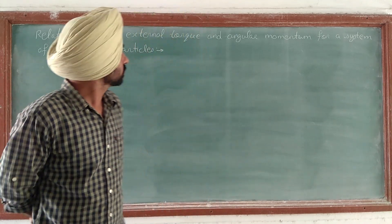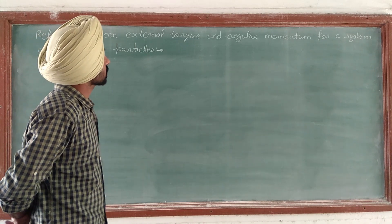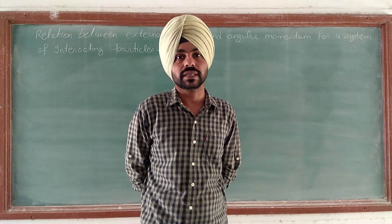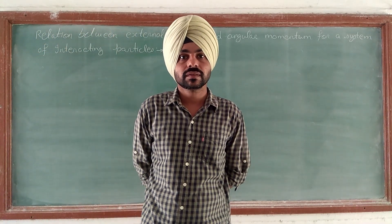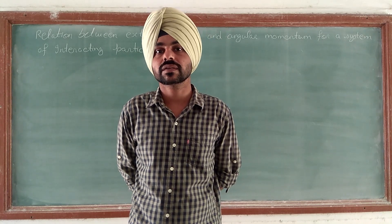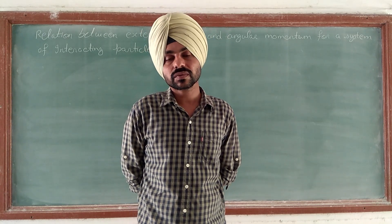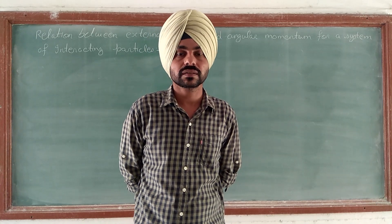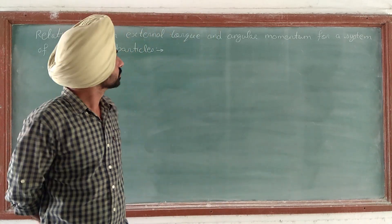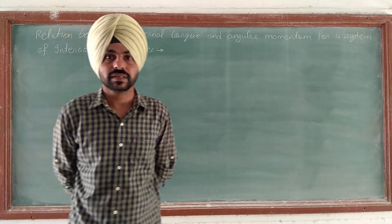Today we will discuss the relationship between external torque and angular momentum for a system of particles. Here we will consider the external forces acting on the system, in addition to the internal forces, and then find out the relation between the torque and angular momentum.